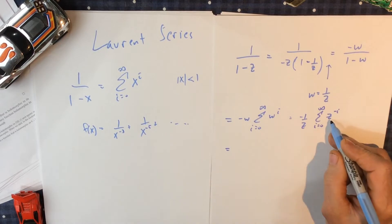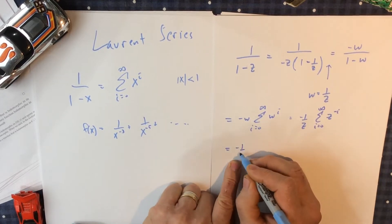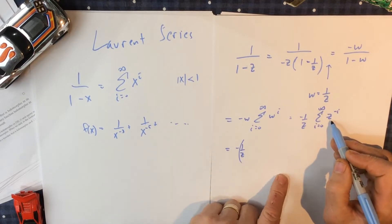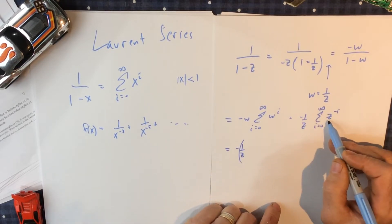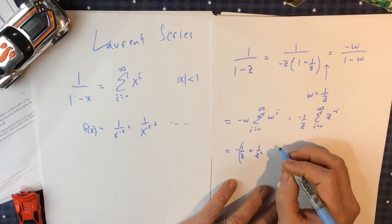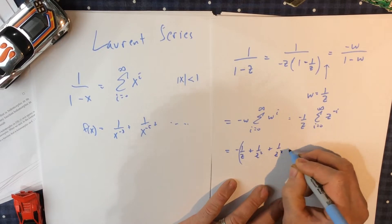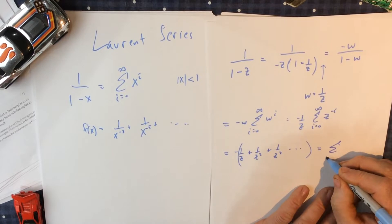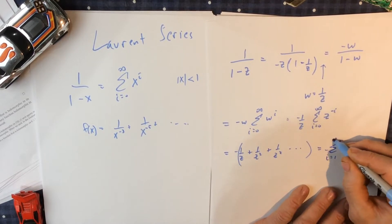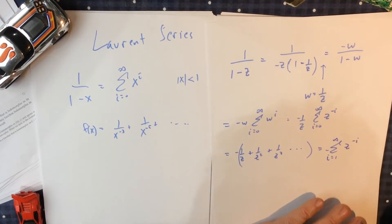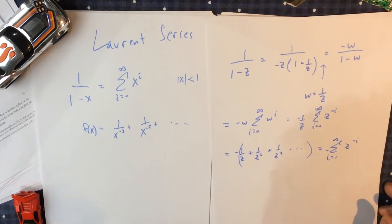Writing this out: it's minus 1 over z. So 1 over z times 1, 1 over z. Then 1 over z times 1 over z, that's 1 over z squared. And 1 over z times 1 over z squared, that's 1 over z cubed. Lo and behold, I have a series: sum from i equals 1 to infinity of z to the minus i. This is a negative power series.